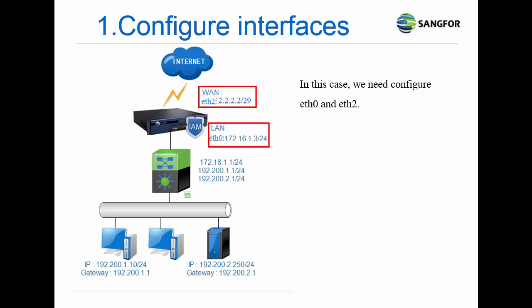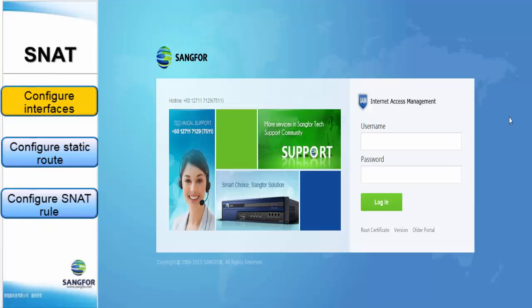In this case, we need to configure ETH0 which is the LAN port, and ETH1 which is the WAN port. First, we need to configure the interface.